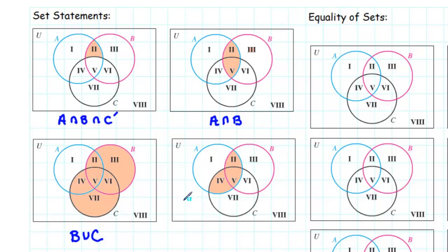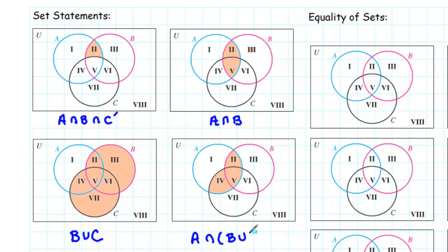That brings us to our fourth Venn diagram. How could we describe this shaded region? Notice that regions 2, 4, and 5 are all inside of circle A. Also notice that regions 2, 4, and 5 are all inside of B union C. Therefore, regions 2, 4, and 5 are in the intersection of A and B union C. So we can write this as A intersected with B union C.